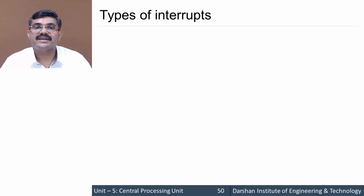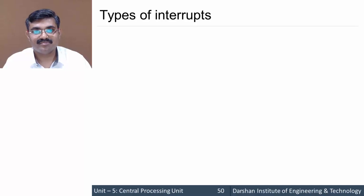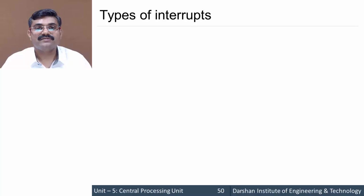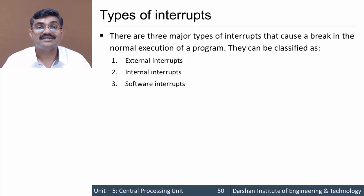Now let's discuss the types of interrupts. In general, an interrupt is initiated, the ISR is executed, and control returns to the main program. There are basically three types of interrupts: external interrupts, internal interrupts, and software interrupts.